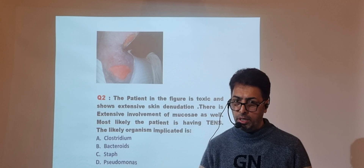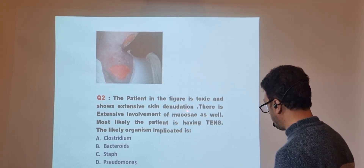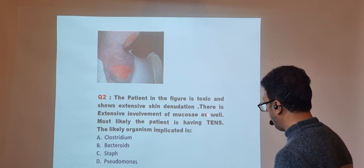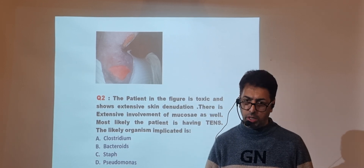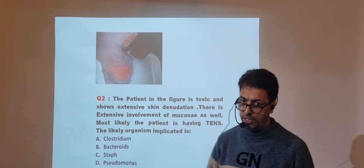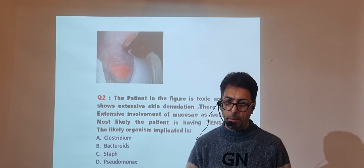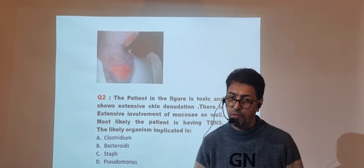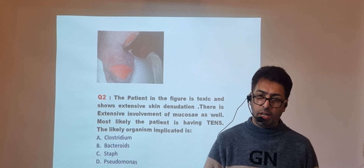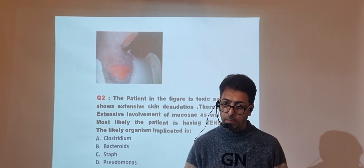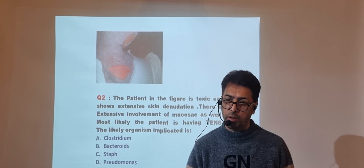The next question has a figure where the patient is toxic and shows extensive skin involvement with mucosa also involved. The diagnosis given is toxic epidermal necrosis, and the question asks about the organism implicated. You need to know the full clinical spectrum — pathology, microbiology, and clinical presentation of diseases — and how to come to a diagnosis and answer the question appropriately. Toxic epidermal necrosis is in some cases a severe form of Stevens-Johnson syndrome.